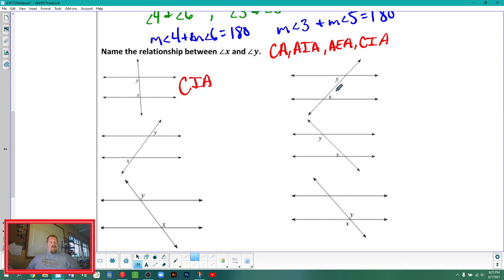The next one, X and Y, they're still on the interior. This time they're on the opposite sides of the transversal. You have to cross over that transversal to get to the other one. So they're alternate interior angles. On the third one here, X and Y, they're on the exterior this time. That really cuts me down to two possibilities. And they're on opposite sides of the transversal. So they're alternate exterior angles.